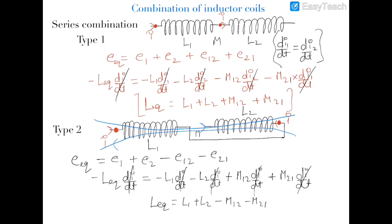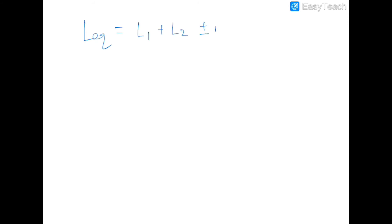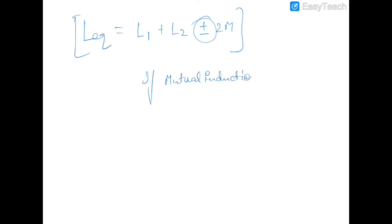Conclusively, the equivalent inductance of any two coils connected in series is L1 plus L2 plus or minus 2M, depending on whether the current entering the two coils is from the same direction or different directions. If mutual induction is ignored, the equivalent inductance is simply L1 plus L2.